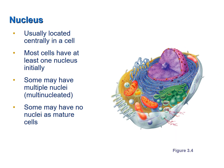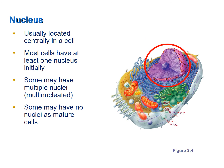Let's now talk about the nucleus. The nucleus is centrally located in a cell, usually, and it typically takes on the overall shape of the cell in general. Most cells have at least one nucleus, at least initially. Some cells may have multiple nuclei when they are mature — what we call multi-nucleated cells. An example would be skeletal muscle fibers or cells.